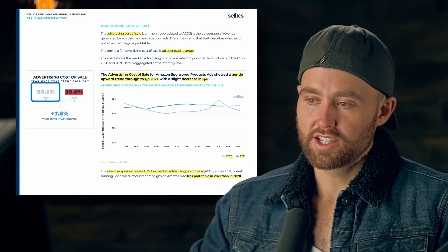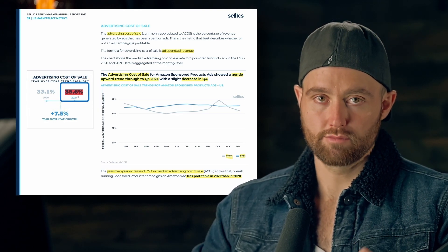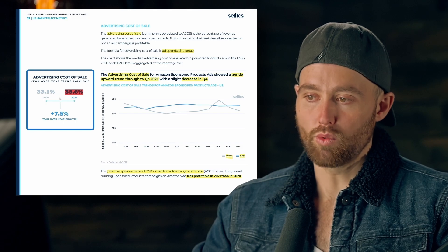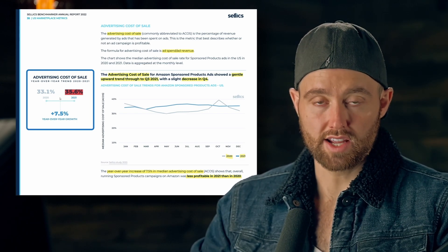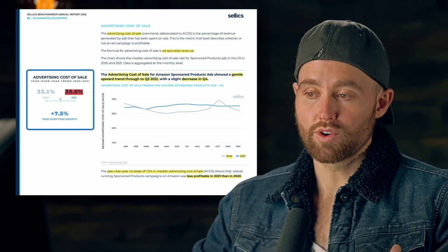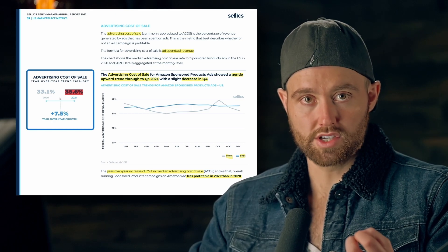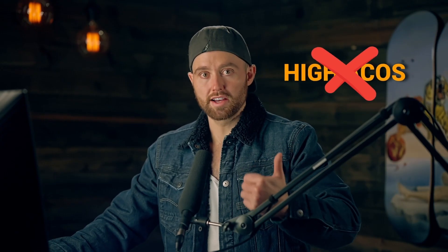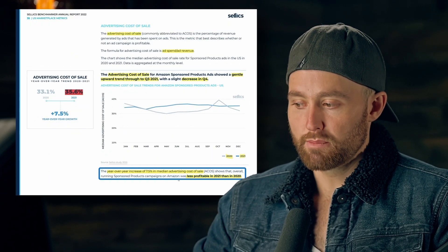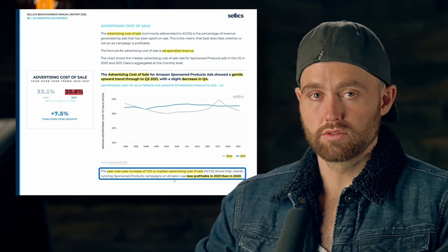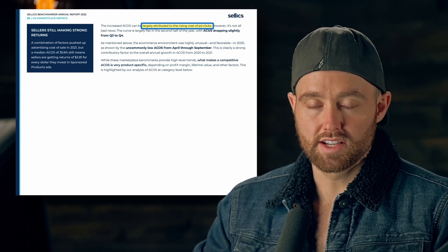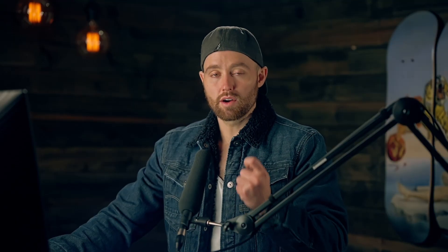ACoS in 2020 was 33.1 percent; in 2021 it's 35.6 percent. This increase was lower than expected — what we're seeing is more purchasing occurring, as shown by higher conversion rates. We're paying higher cost per clicks but converting more of those clicks. Overall though, Amazon advertising campaigns are less profitable than they were in 2020, largely attributed to rising cost per click due to more competition.